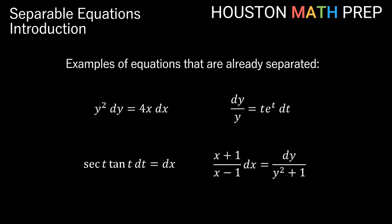The idea is being able to put all of one variable expression on one side, all of another variable expression on the other side. You can see we have some examples here. These are equations that are already separated — we have a dy and a dx, with the y's with the dy and the x's with the dx. Similarly, we have y's and t's all together, and all the t's together, and here all the x's on one side and all the y's on another side.